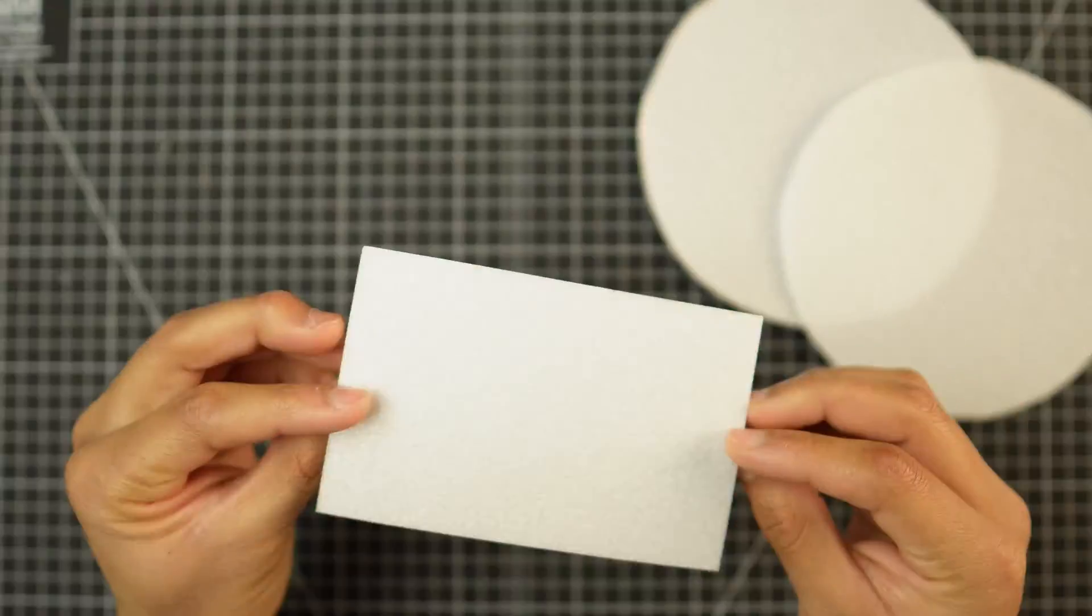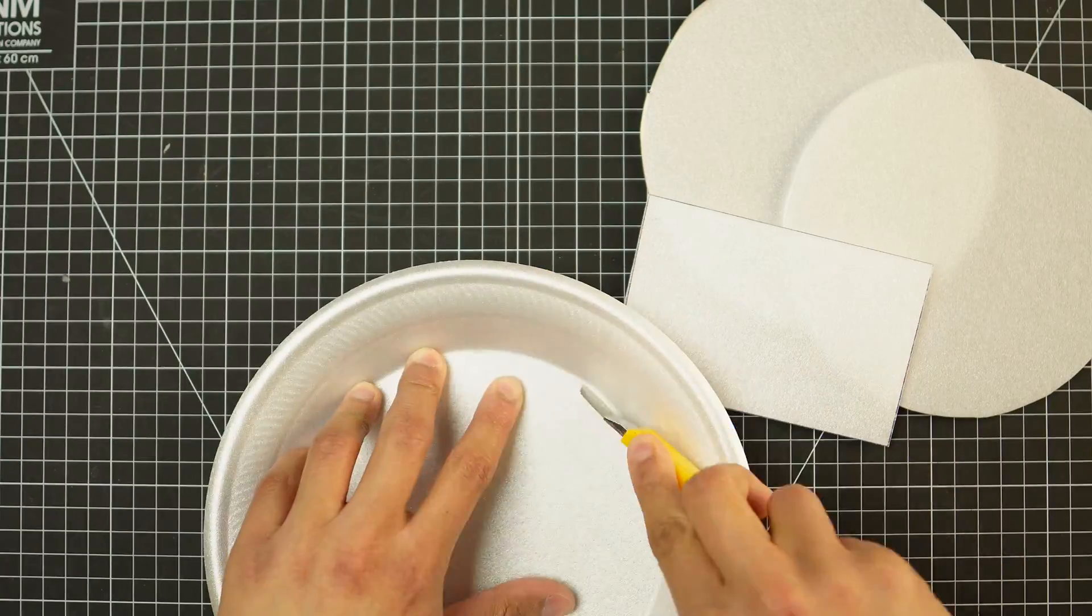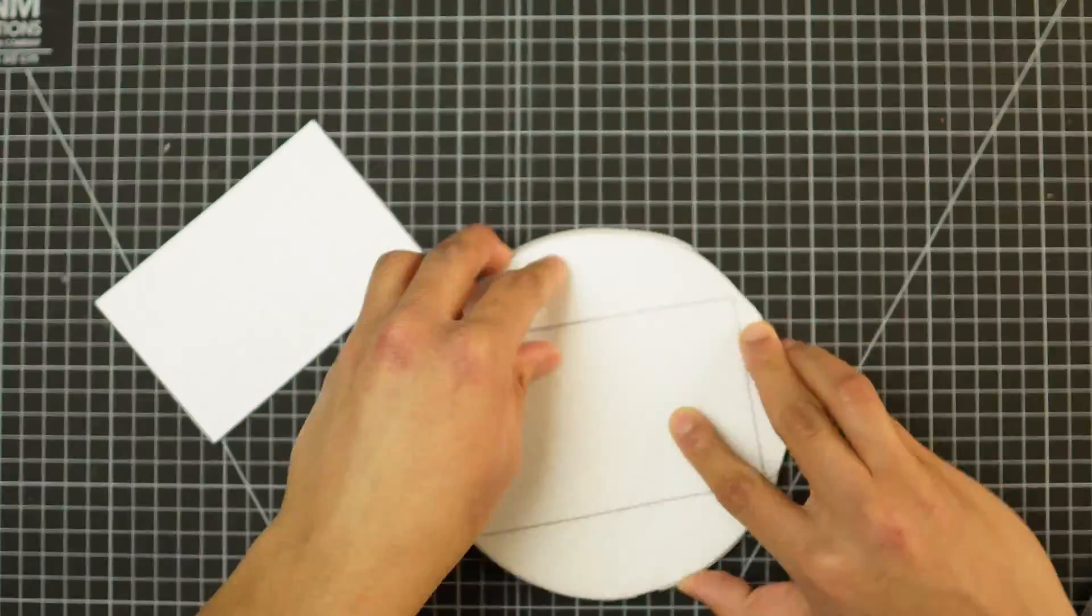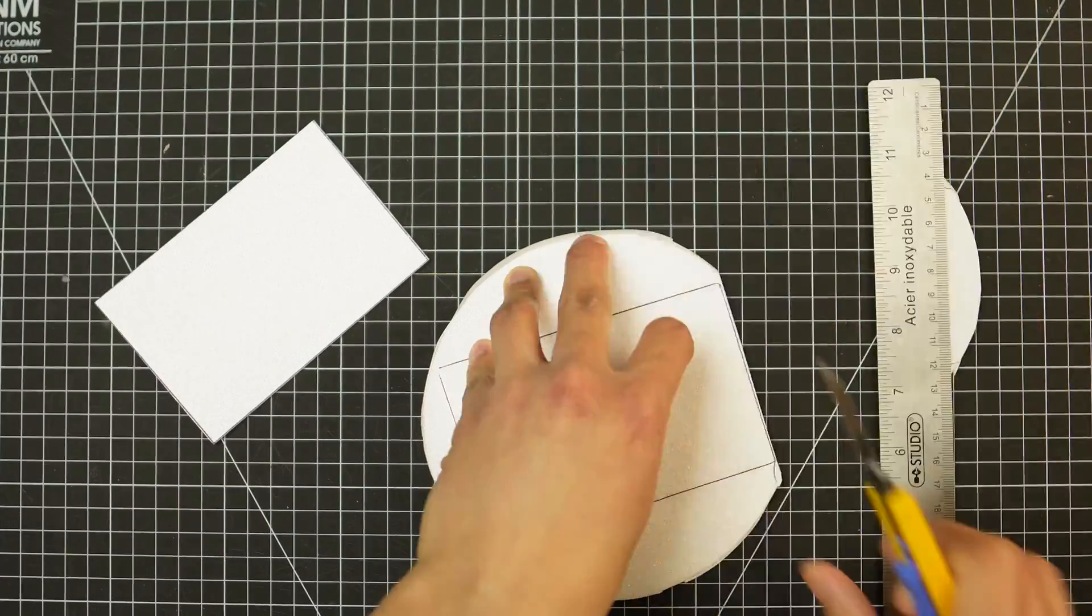Once you have your desired rectangle, you want to trace that onto three other styrofoam pieces, so you have a total of four identical pieces of rectangle.